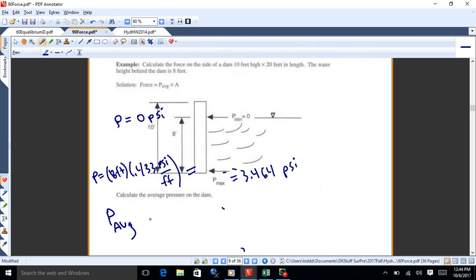So, if you want to find the average pressure here, what you do, you take the pressure at the top plus the maximum pressure at the bottom over 2, and you'll get 1.732 psi. So, that's the average pressure. Remember what that is, is pounds per inch squared. So 1.732 pounds per inch squared.